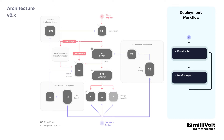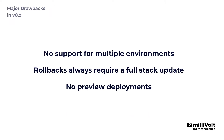While this workflow is easy to use for most of our early users, it has some drawbacks, especially when your app or team grows. When you need multiple environments like development, testing and production, you always have to duplicate the whole stack for each of these. Or when deploying a new version of your app and something goes wrong, a rollback always requires a full build and stack update. This costs valuable time when you try to restore your app into a working state. And lastly, there is no way to create review deployments like you know from providers like AWS Amplify, Netlify, or Vercel.